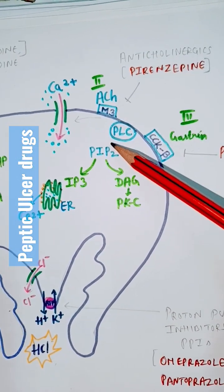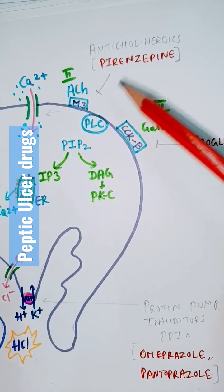Vagus directly releases acetylcholine on the parietal cell. So anticholinergics like pirenzepine can be given.